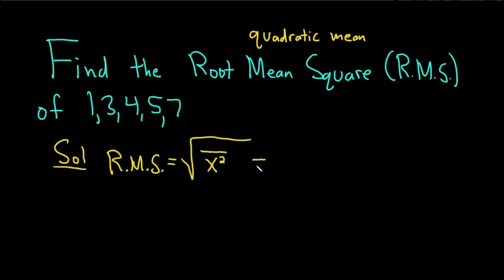It's equal to the square root of the average of the data squared. Basically, you take all of the data, square it, and then divide by the number of data.